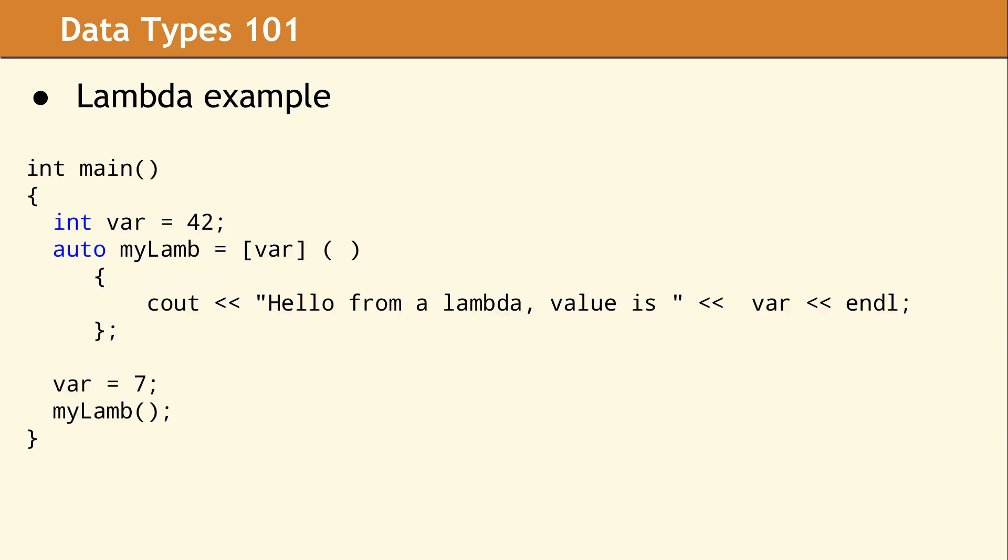So here's an example of how to set up a Lambda and how you call the Lambda. The int var equals 42 is a standard line of code to define var. The auto myLamb followed by the square brackets, parentheses, and curlies is the definition of the Lambda. After this definition, we redefine var equals 7. The last line of myLamb is what actually calls and invokes the Lambda. The question is whether myLamb will actually do an output saying the value of 42 or 7. This depends on the capture list. Since var is captured by value, at the time that the Lambda is declared and defined, var is equal to 42. So the line of code that changes var to 7 does not affect the output in myLamb.